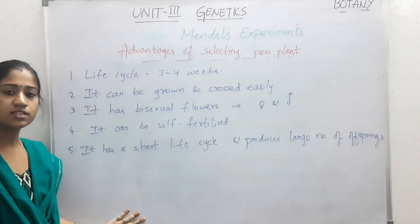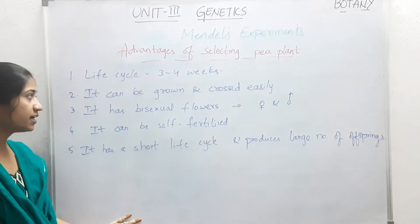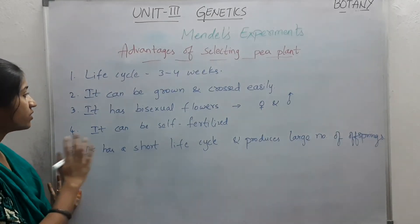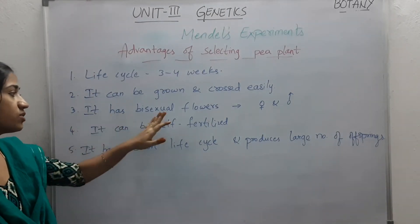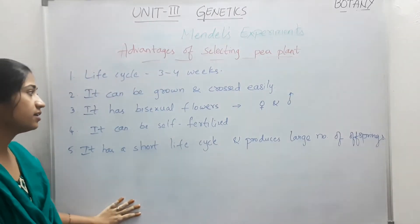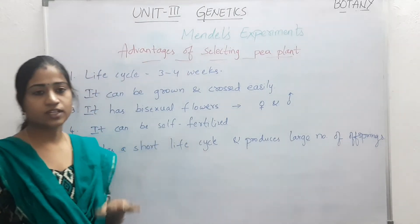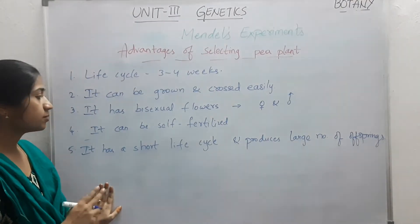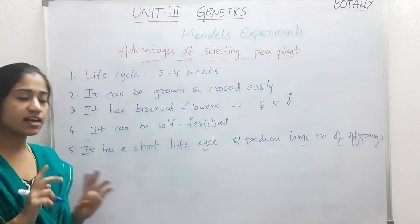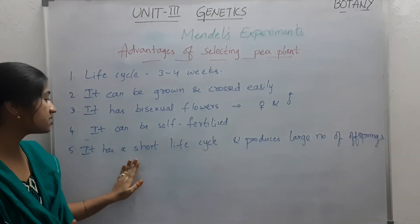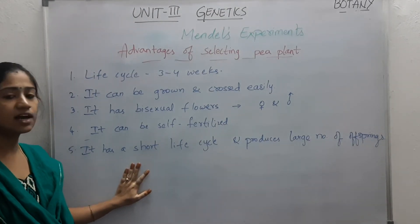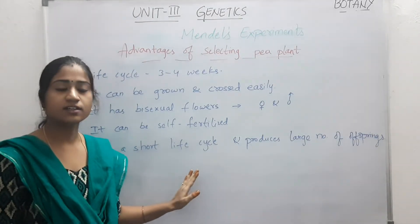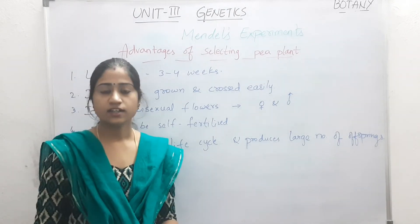The next point is that the pea plant can be grown and cross-pollinated very easily. It has bisexual flowers containing both male and female parts. It can also be self-fertilized. It has a short life cycle and produces a large number of offspring, making it easy for studies as well as for experiments.